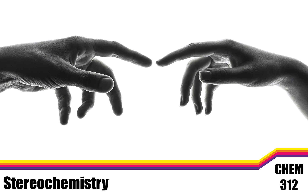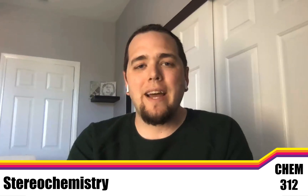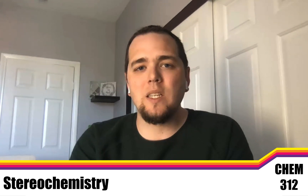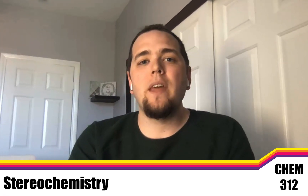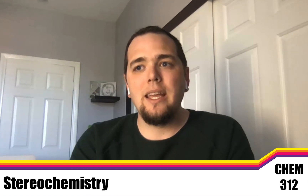Here we are in experiment four, on a topic called stereochemistry — you might also see it as stereoisomerism. If we hear that word isomer or isomerism, that should take us back to our first experiment. If you have model kits, you might want to bust them out for this experiment. They are really helpful in creating these structures and looking at them in three dimensions.